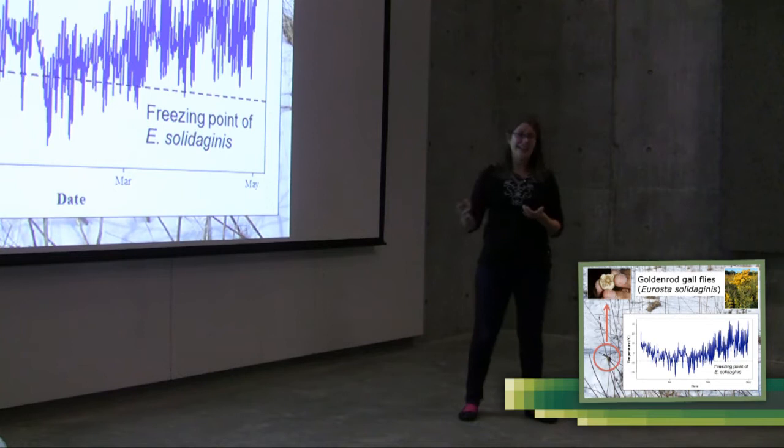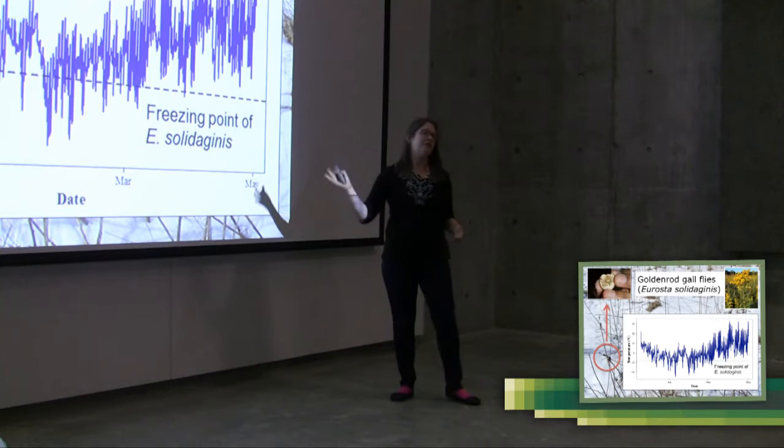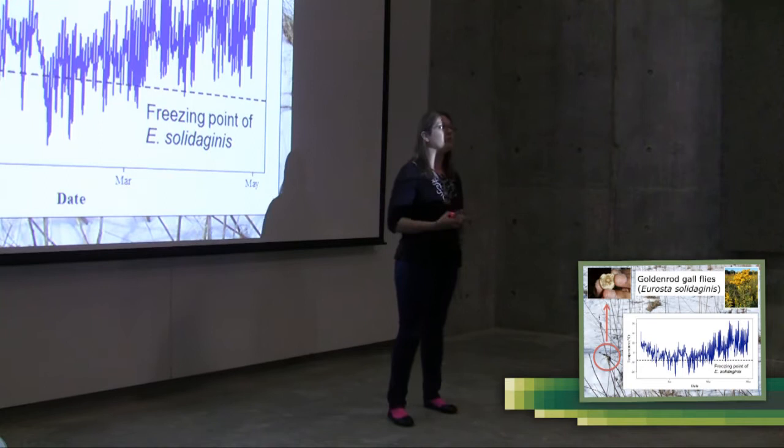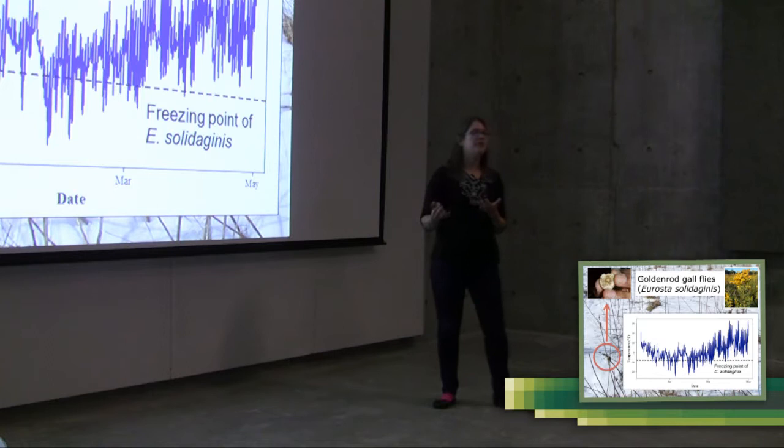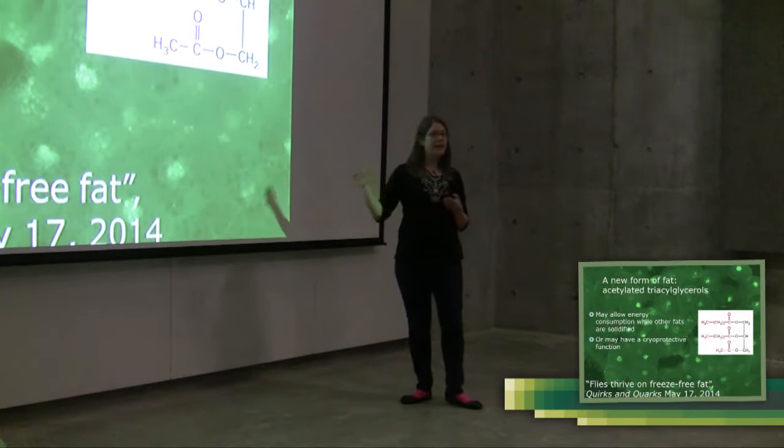And some of my lab tests have actually shown that it can survive freezing 10 times at minus 20 degrees Celsius for 12 hours apiece. Other lab tests have shown this fly can survive being frozen solid at minus 80 degrees Celsius for a day or two. It's really an incredibly freeze-tolerant animal. And it does this by producing cryoprotective compounds. We'll talk a bit about what those might be later on. It also produces some antifreeze proteins. And I'll show you some examples of those.